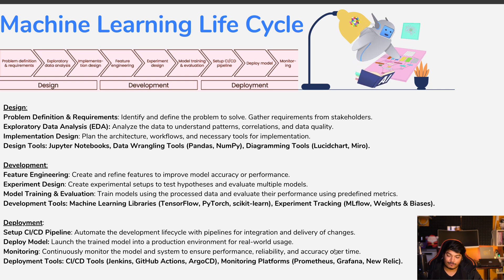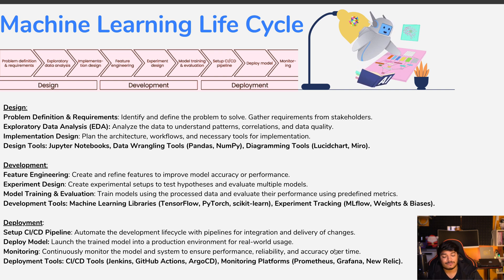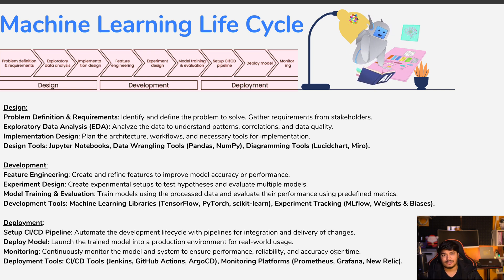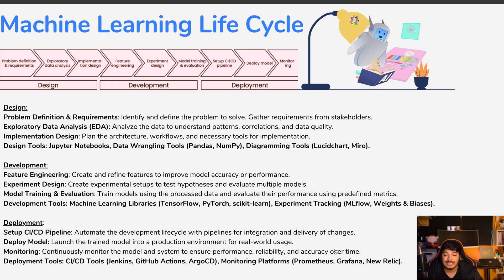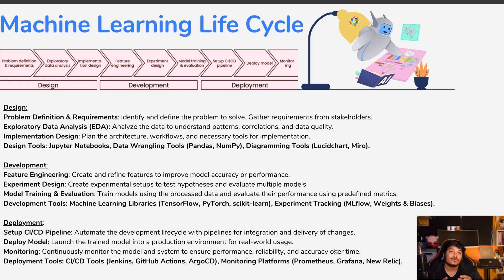In the development phase, we do feature engineering, experiment design, model training, and evaluation — the most important part. Tools include ML libraries like TensorFlow, PyTorch, and scikit-learn, and experiment tracking using MLflow, Weights & Biases. In the deployment phase, we set up CI/CD pipelines, deploy models, and monitor them using tools like Jenkins, GitHub Actions, ArgoCD, Prometheus, and Grafana.